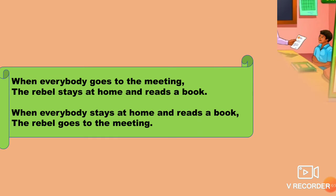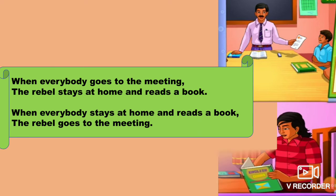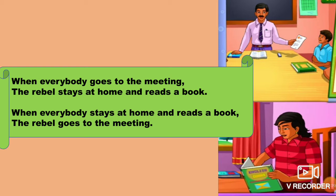When everybody goes to the meeting, the rebel stays at home and reads a book. So when everybody goes for a meeting arranged by a master or somebody, the rebel stays at home and reads a book. When everybody stays at home and reads a book, the rebel goes to the meeting. He just acts in the opposite manner — always reacts in the opposite manner and never agrees with the people around him, just to gain their attraction.